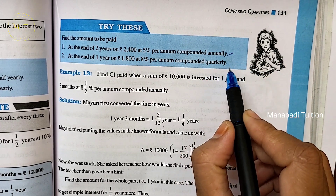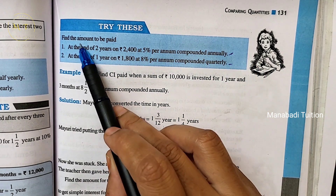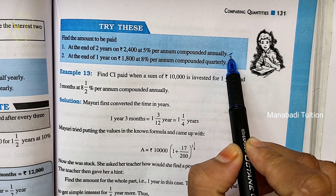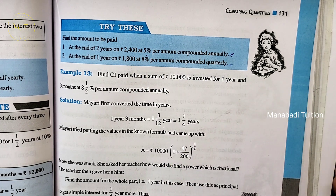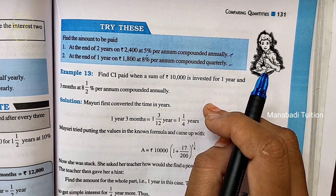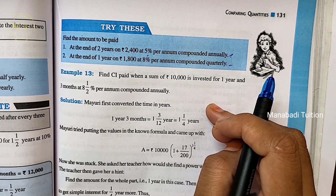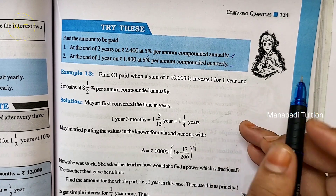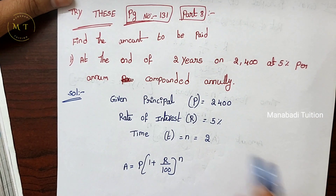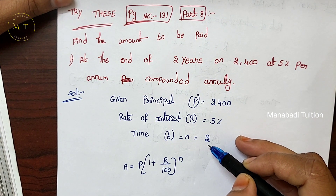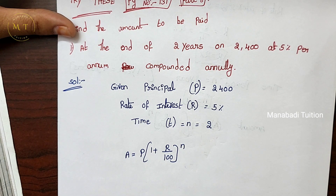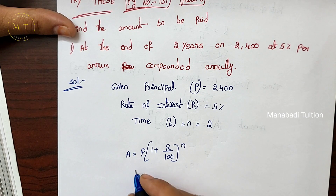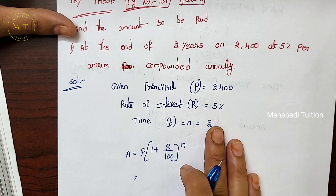If you are doing the second problem, it is called quarterly. Here I am going to find the amount. If you have any annual rate of interest, it will change for quarterly or half year. Before this, you have page number 130 which I have already covered - you can check that video. You will need the principal, interest, and time. For compound interest you will use the formula: Simple Interest = PTR/100, and compound interest uses the same approach with the formula where T becomes the N value.